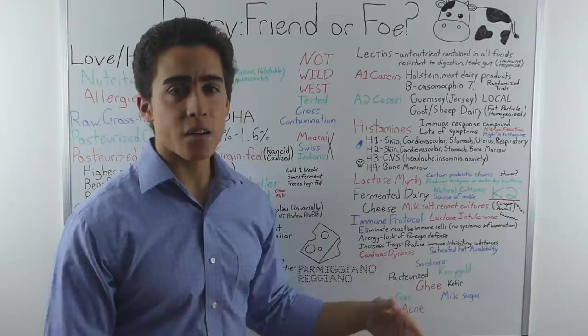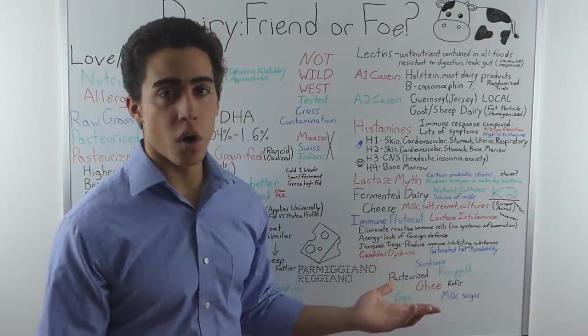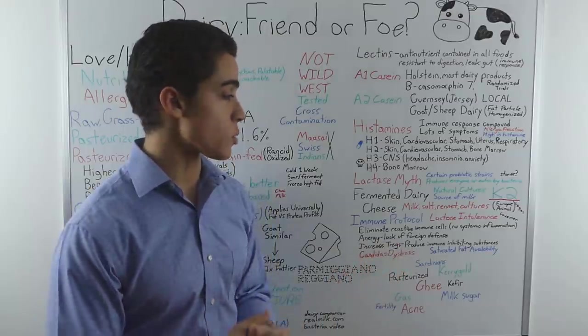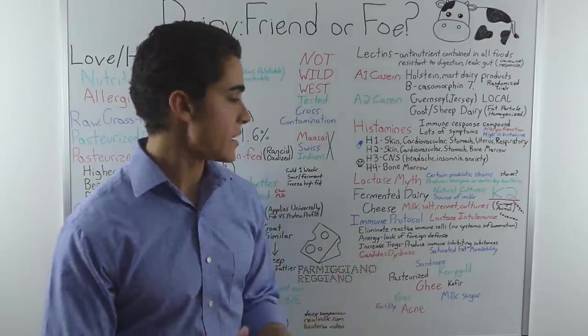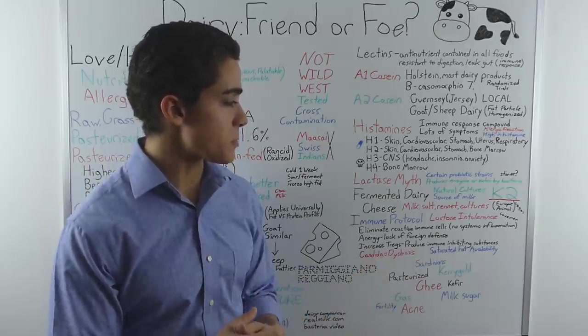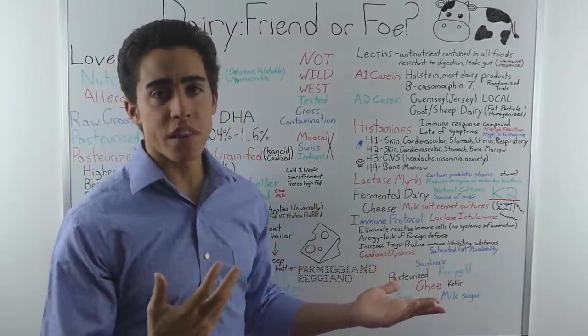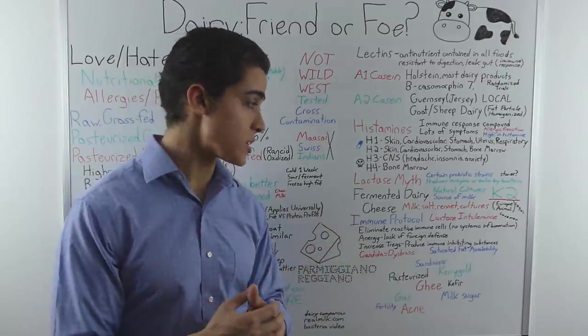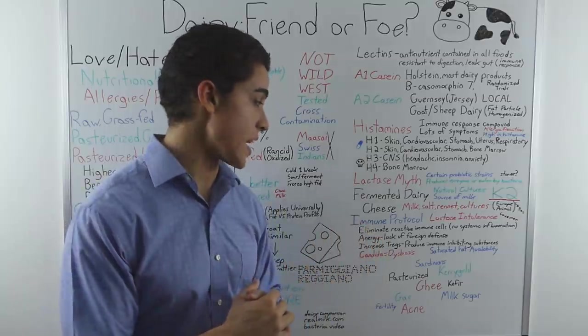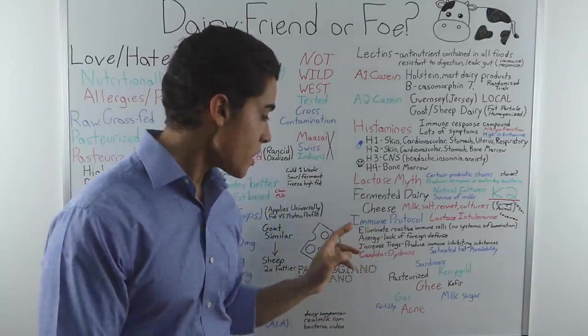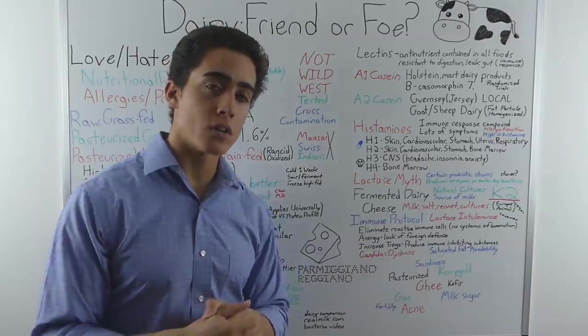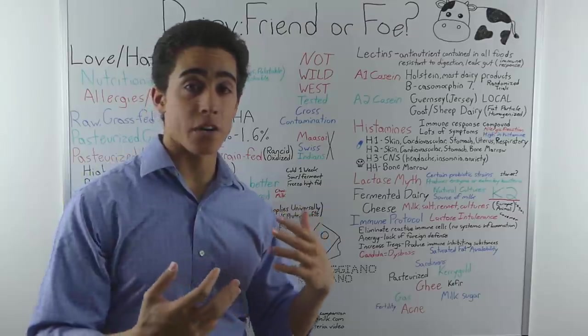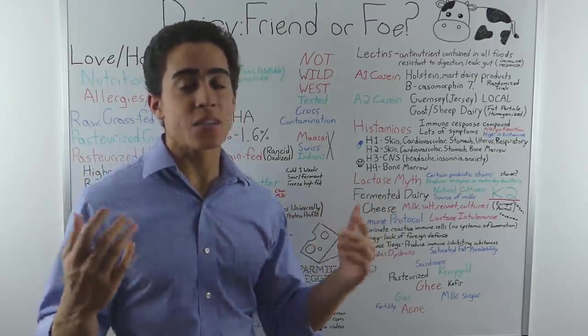It's kind of crazy that raw cheeses are legal. You can literally walk into a supermarket and buy a raw cow cheese made halfway across the world, but you can't buy raw dairy. It's interesting, but it makes a food that is usually inaccessible to people accessible. And it's a great source of nutrition that, as I said, just about every single person has access to. On to the immune protocol. Some of you guys may be aware that I was testing an immune protocol for fixing a dairy allergy. It didn't really go so well.